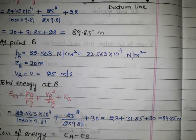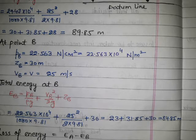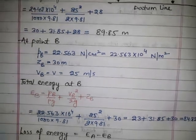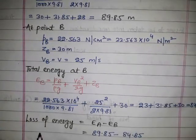Finally we get total energy at B, which is 84.85 meters.